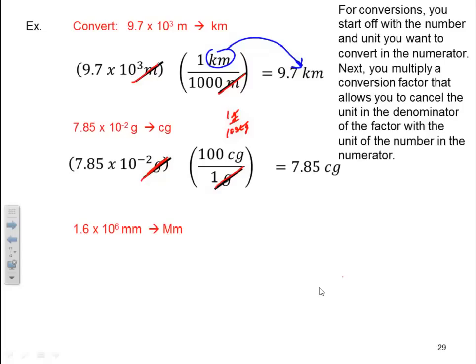1.6 times 10 to the 6 millimeters going to megameters. Start off with my 1.6 times 10 to the 6 millimeters. In this case, I don't have a direct link. I've got to go through another unit to get there. There's no millimeters straight to megameters. So I know I memorized milli. So I know there's a thousand millimeters to one meter. Once I get to meter, then I can go from a million meters to one megameter. So I plug in my thousand millimeters, which would be in the denominator, to one meter. That way my millimeters cancel.